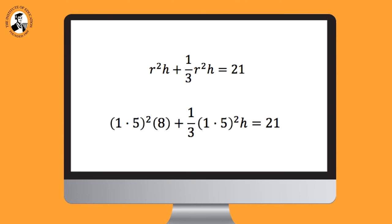That is going to be added to a third, 1.5 squared, which again is the radius of our cone, multiplied by the height of our cone, which we do not know yet, and that is equal to 21.